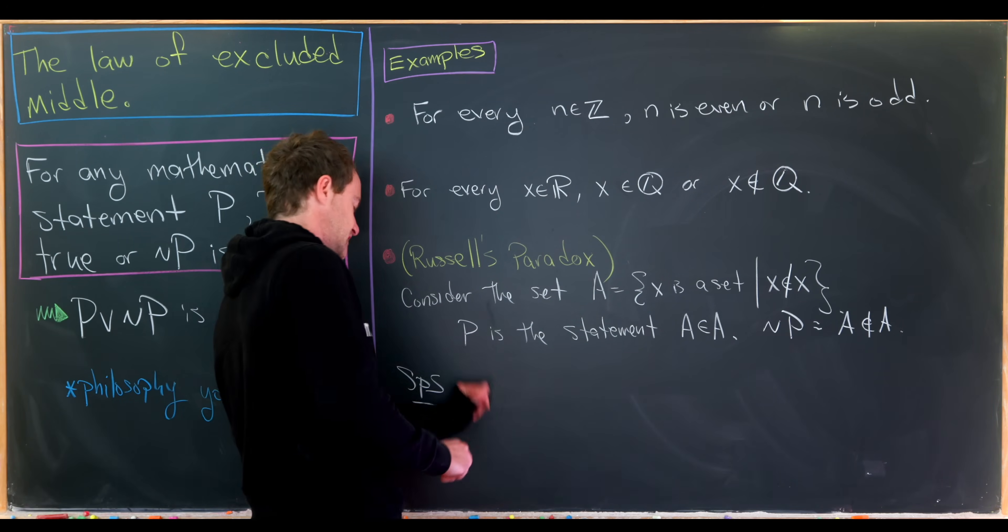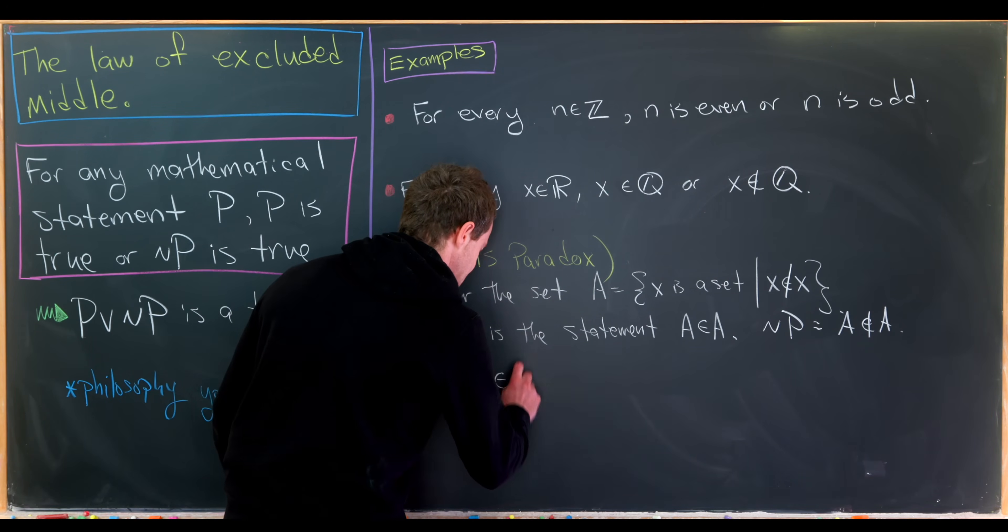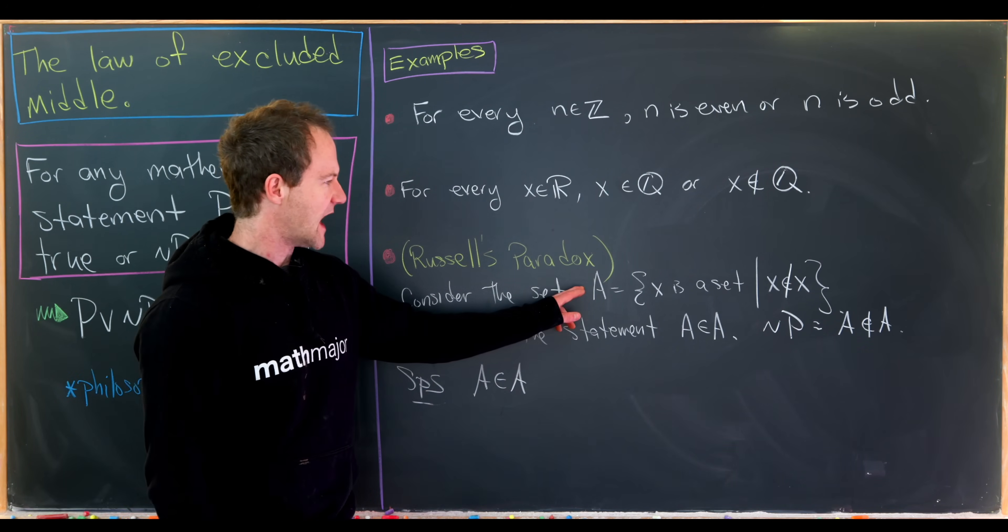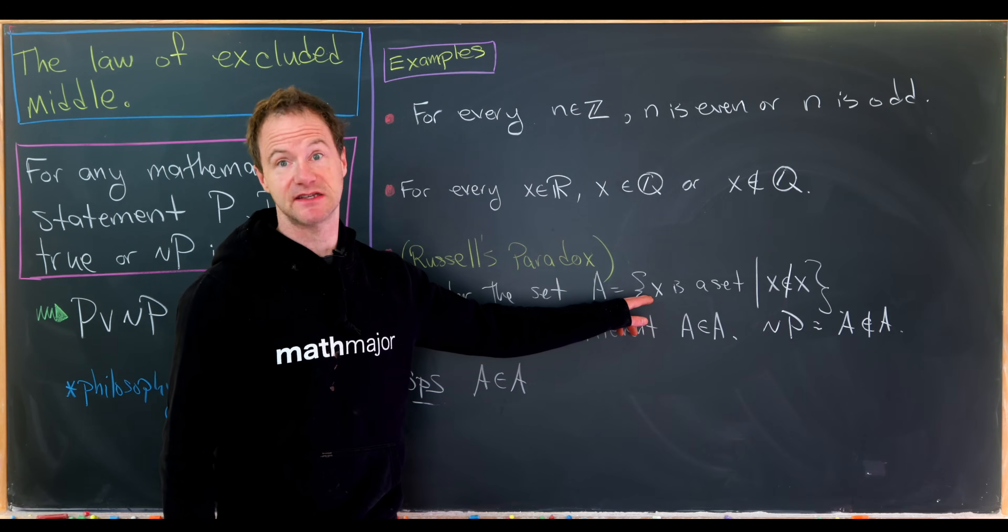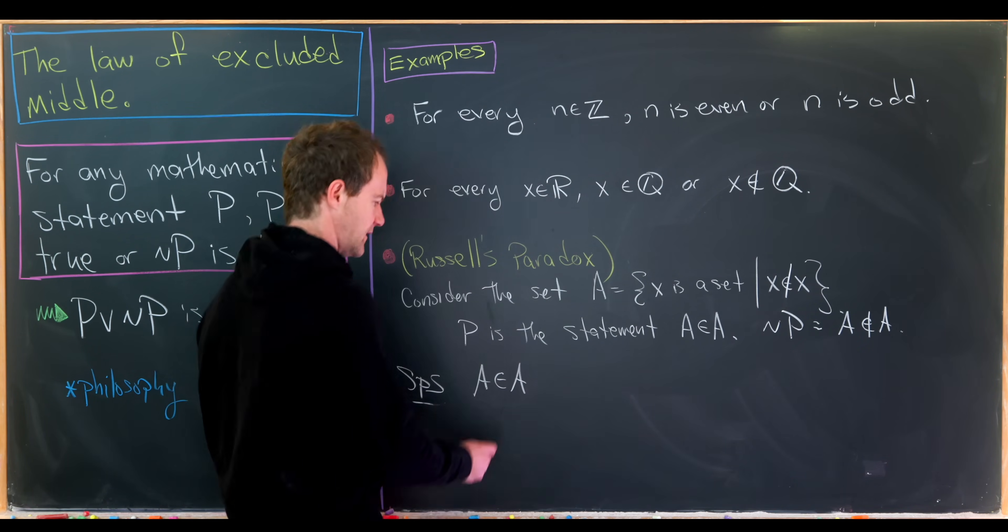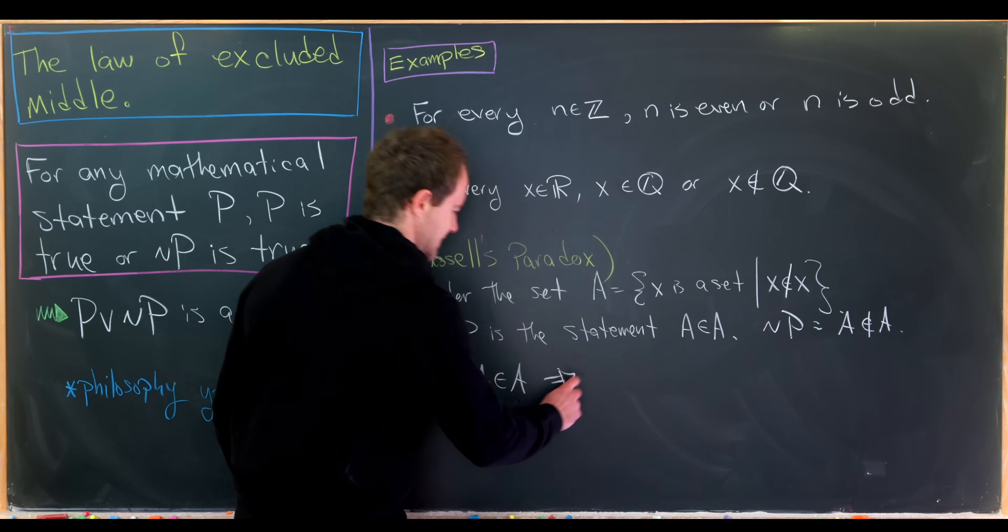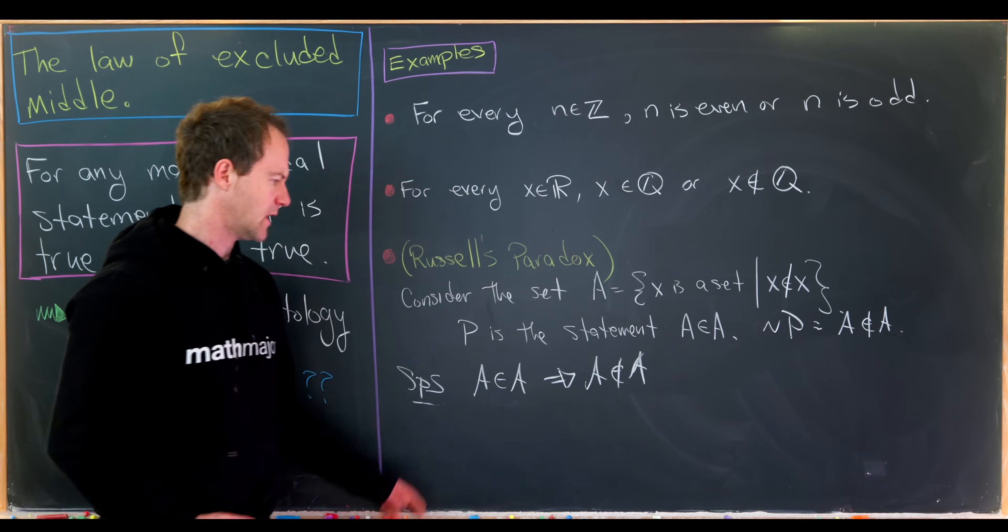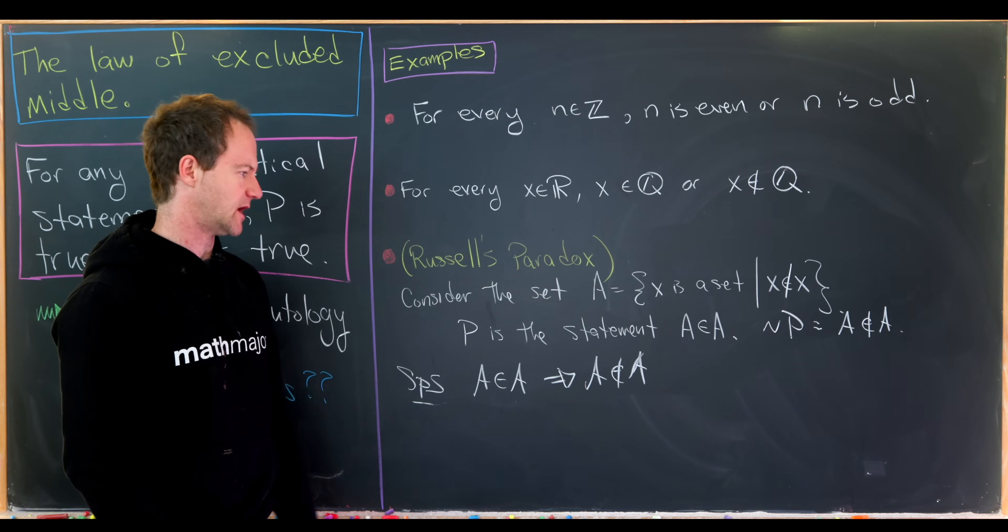Okay, so let's suppose that A is an element of A. But let's see. If A is an element of A, then A is a set, and A is not an element of itself. Oh, so if A is an element of A, that means that A is not an element of A. Okay, so that must be impossible.